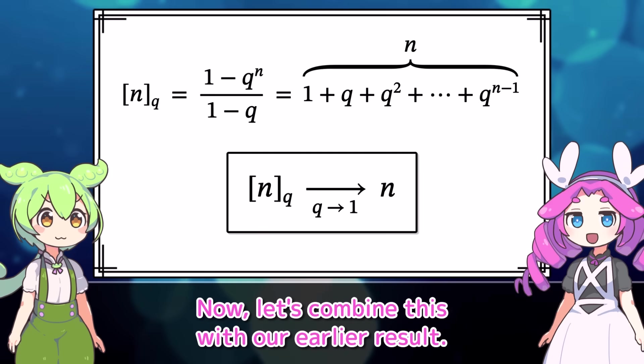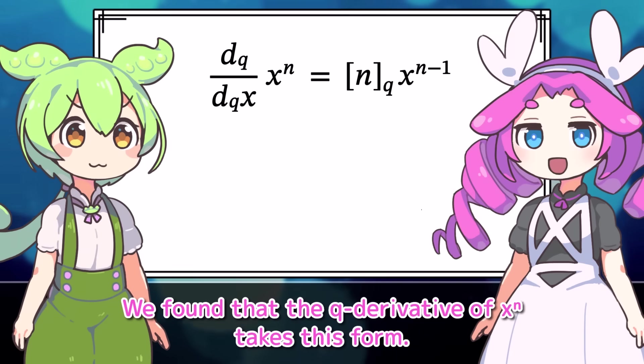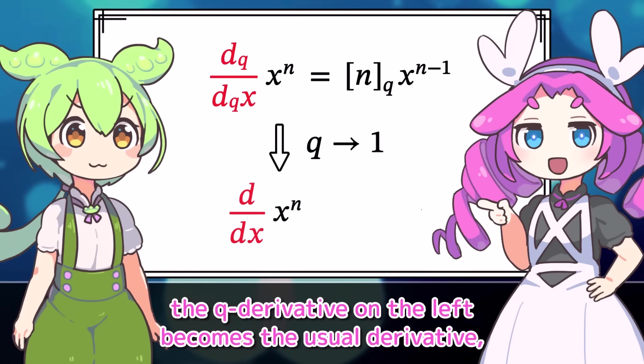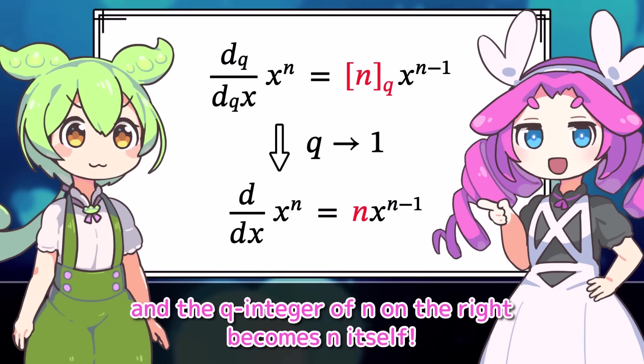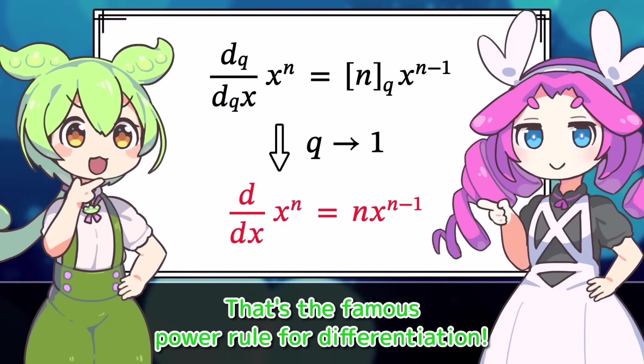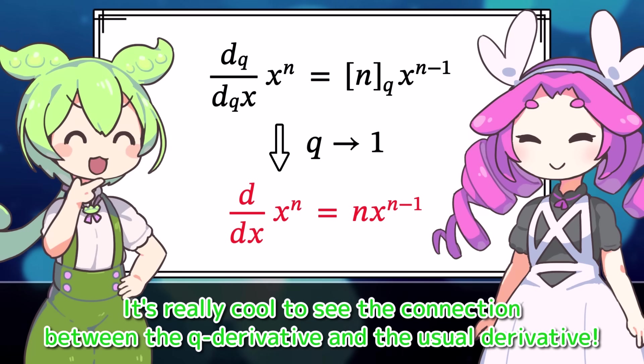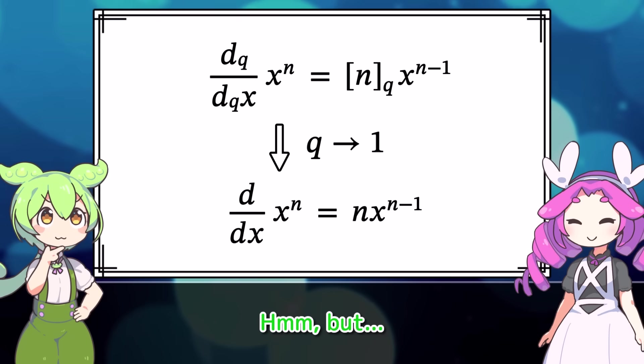Now, let's combine this with our earlier result. We found that the q-derivative of x to the n takes this form. When q approaches 1, the q-derivative on the left becomes the usual derivative. And the q-integer of n on the right becomes n itself. That's the famous power rule for differentiation. So even as q approaches 1, the equation still holds. It's really cool to see the connection between the q-derivative and the usual derivative.